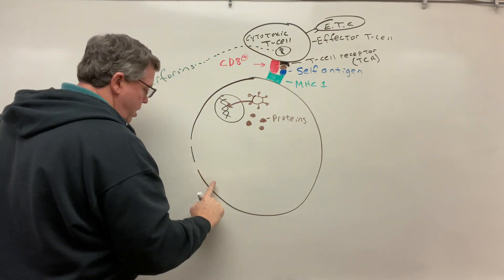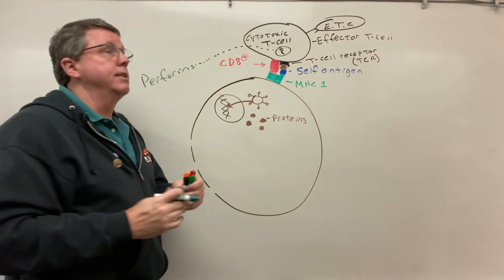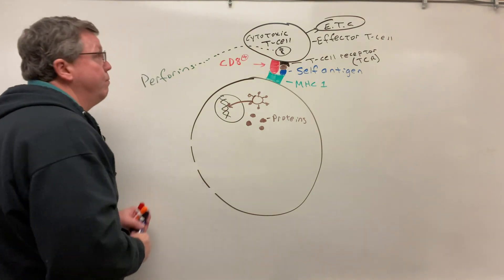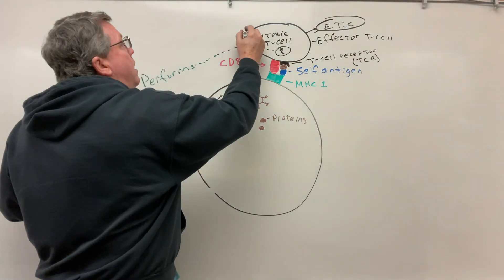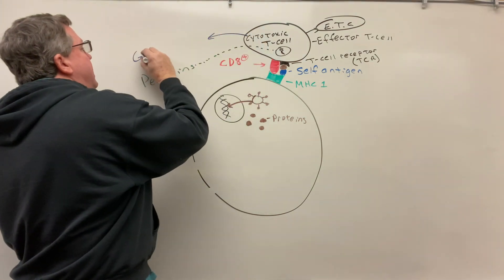And what the perforins is going to do is it's going to make holes in this membrane, okay. Now the second thing that this cytotoxic T cell is going to produce is something that's called granzymes.